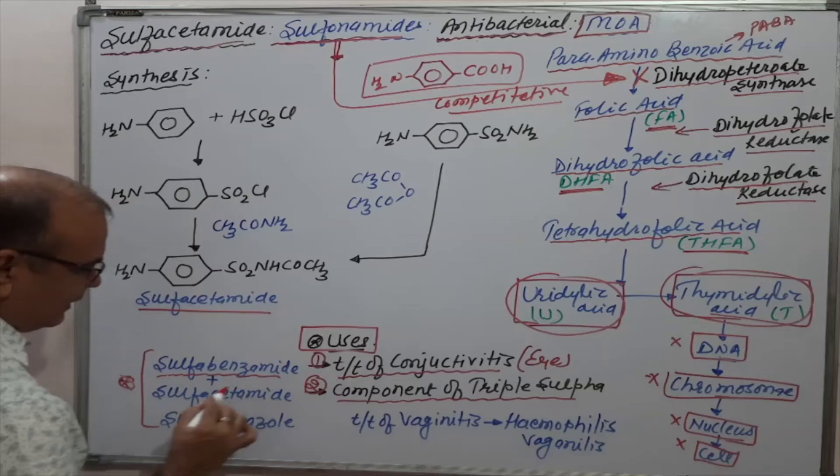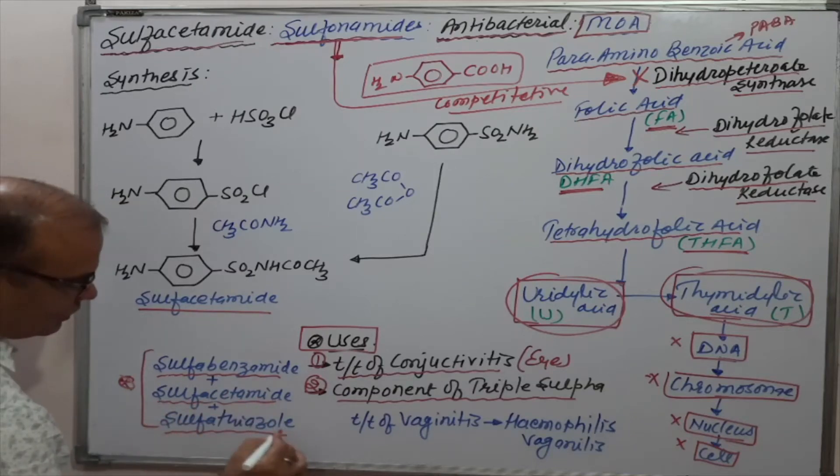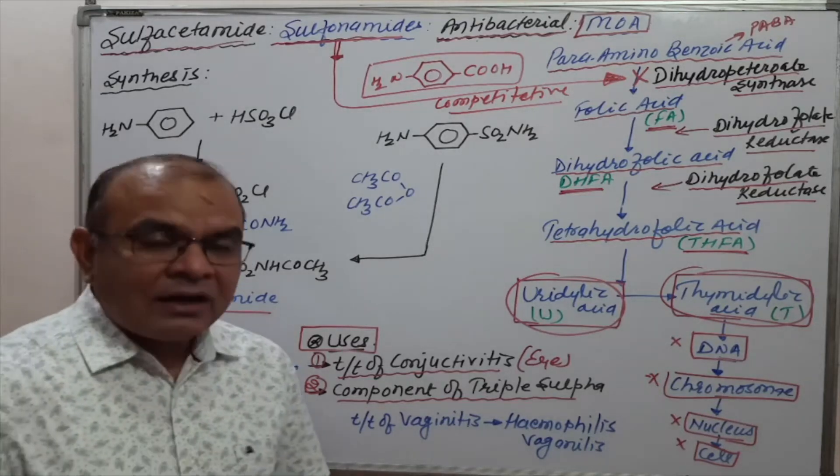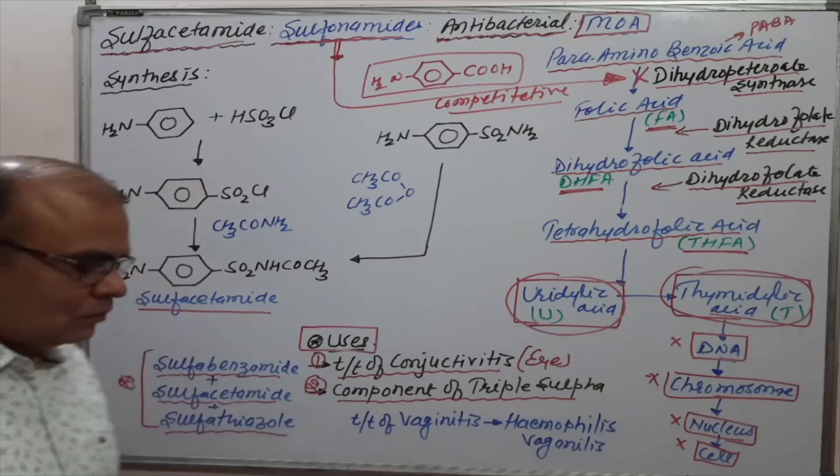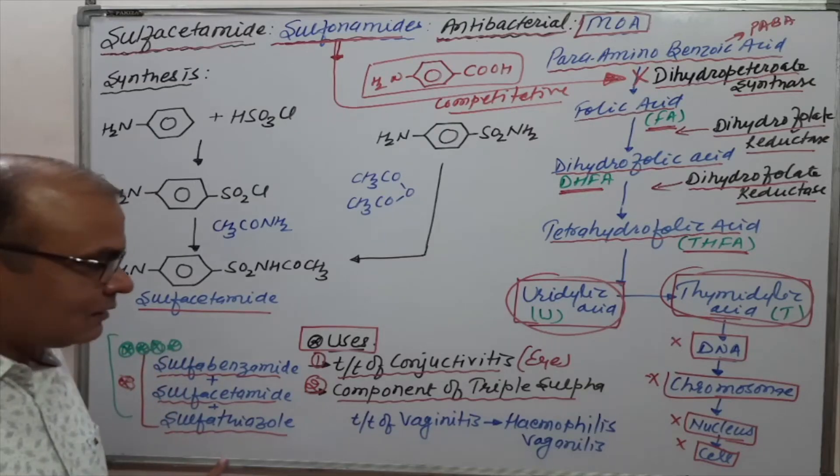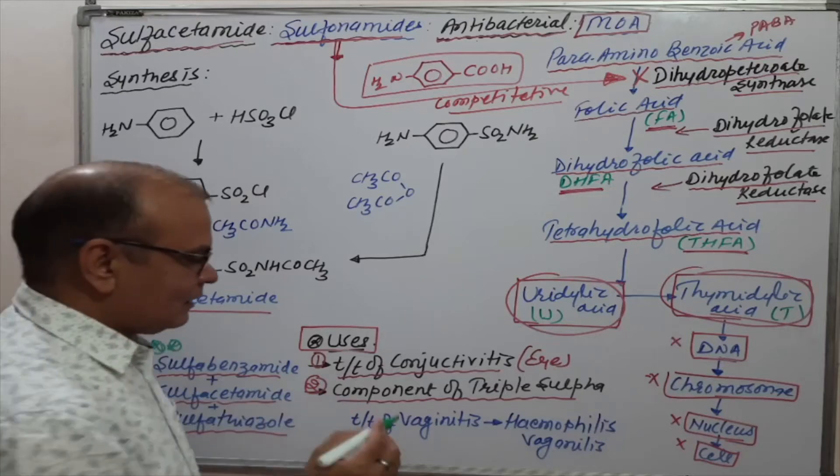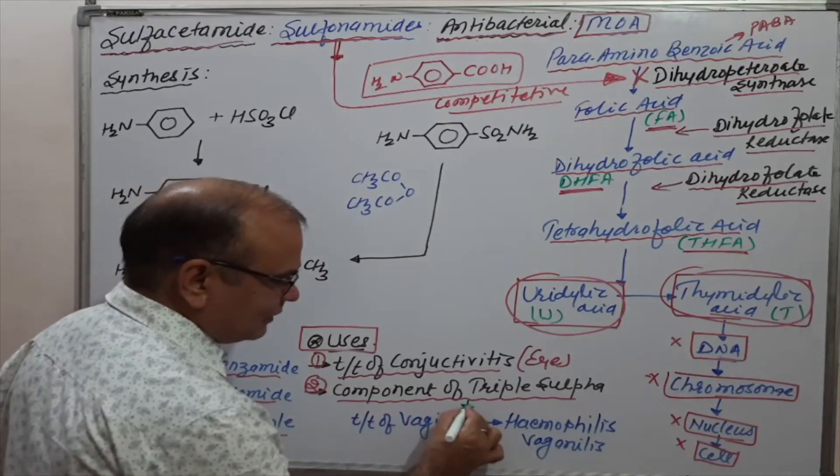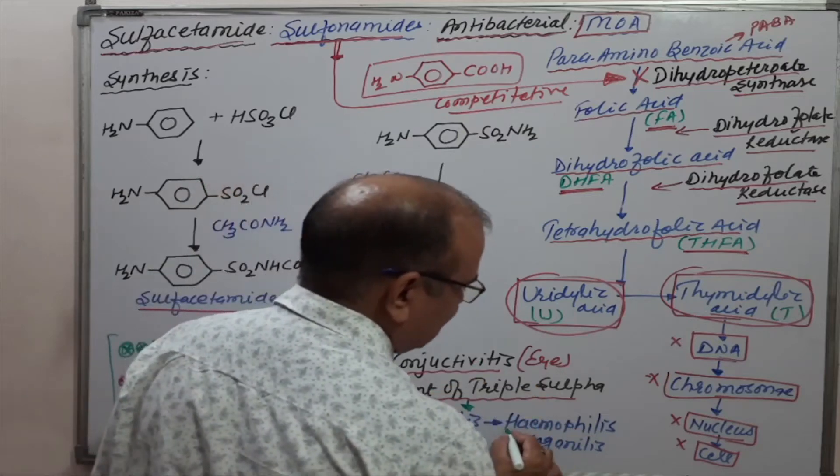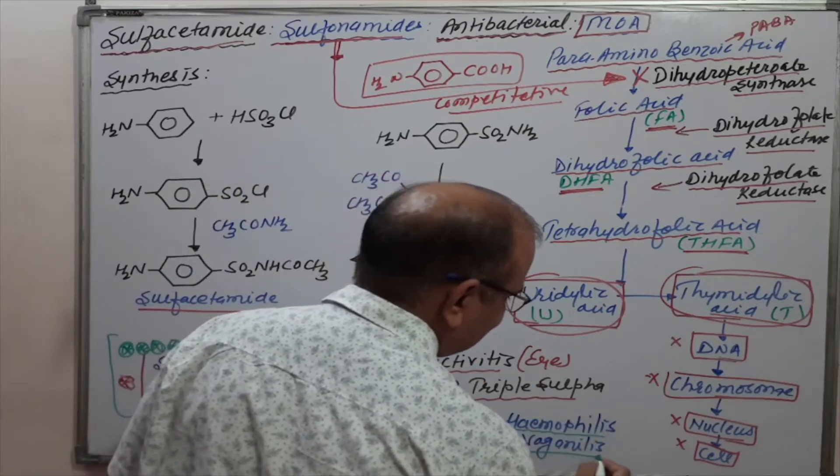What is triple sulfa? As we have discussed earlier, it consists of sulfabenzamide, sulfacetamide, and sulfathiazole. These are known as triple sulfa and many times in different competitive exams like GPAT, DSIR, and pharmacist exam, it has been asked what is triple sulfa.